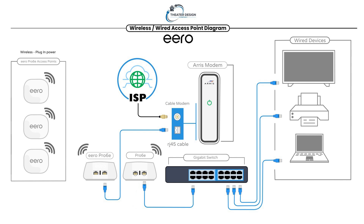We'll probably do an example four to explain that more clearly since it's a bit convoluted to describe here. But this is a solid diagram and a solid setup. Keep in mind that the wired Pro 6 could go to an equipment rack, media center, or media room and wire your devices from there. I hope this helped — watch example one and example two, and hopefully example three worked for you. We're calling this our wireless slash wired access point diagram. Thanks a lot.